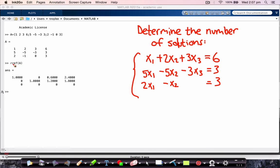And then I just say RREF of A, and it computes the reduced row echelon form of A for me.